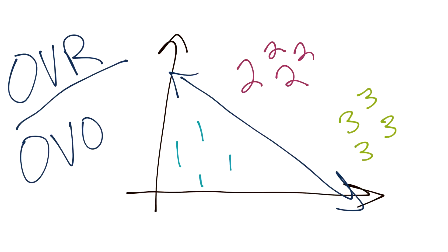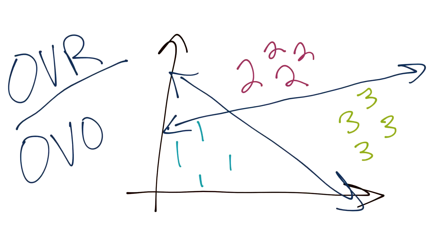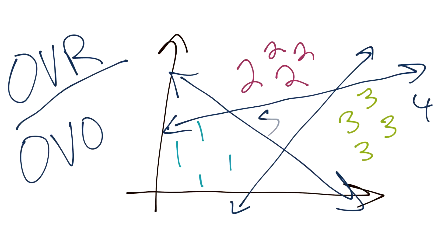We then do the same for the twos versus the rest, finding support vectors and a separating hyperplane for that group as well. One problem with one versus rest is a weighting issue. Even with a perfectly balanced dataset of three groups with four samples each, each separating hyperplane is imbalanced — you've got four data points on one side but eight total data points on the other side, which makes classification more challenging.